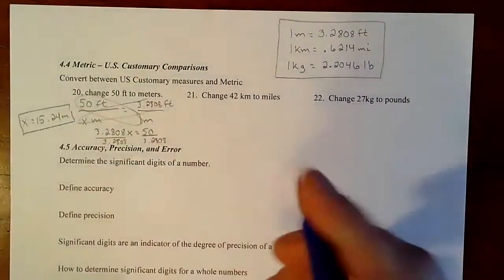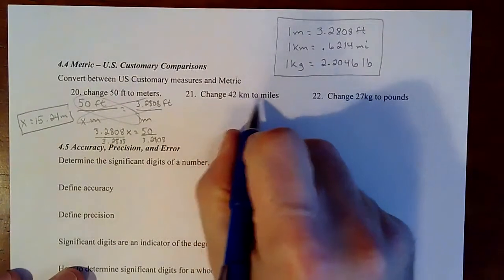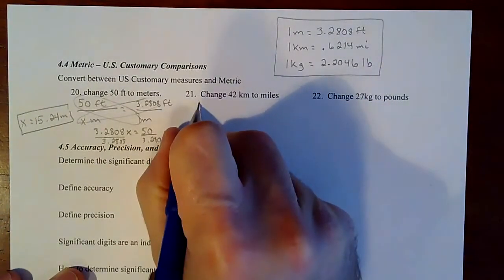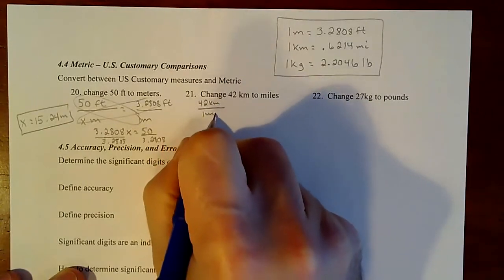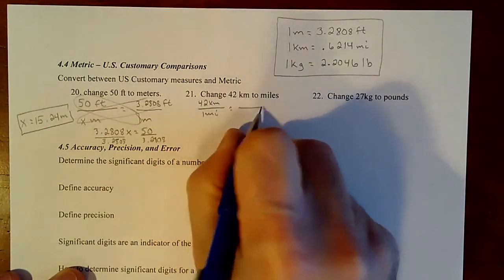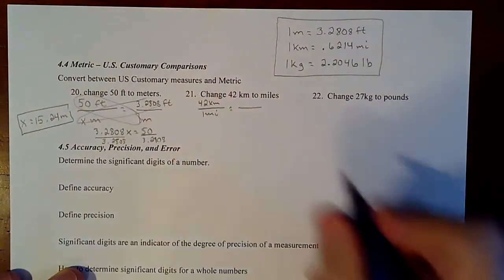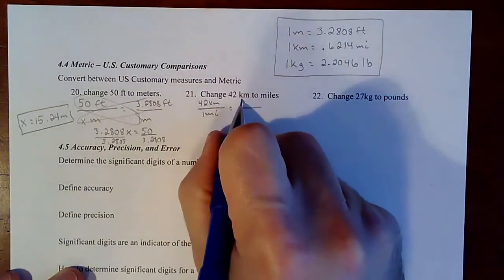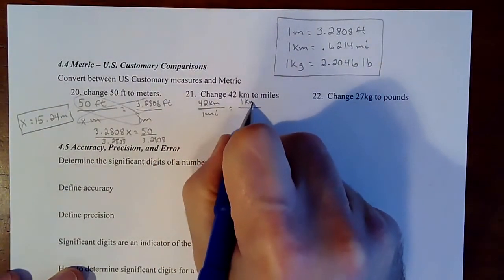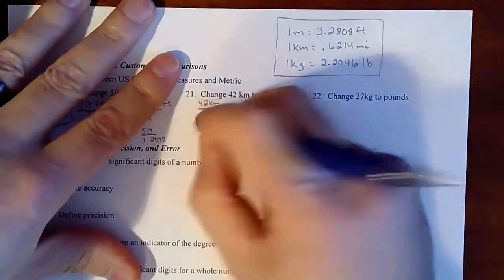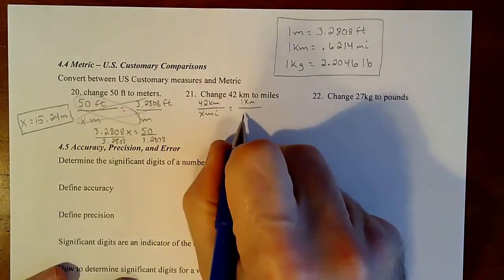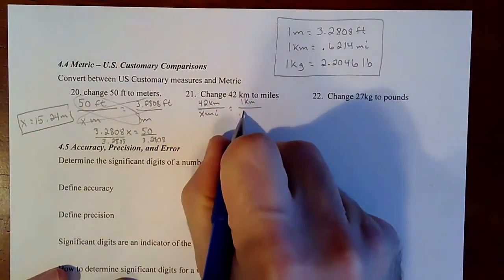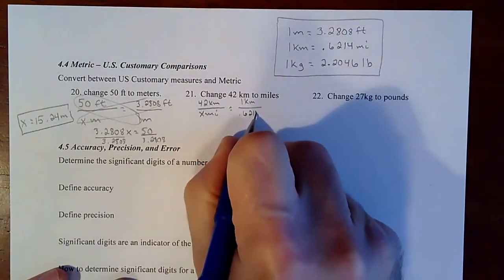Alright, next one. 42 kilometers to miles. So we'll take 42 kilometers to one mile. And then we set up our scale factor, we'll make sure we have kilometers on top. So one kilometer. We don't know how many miles.